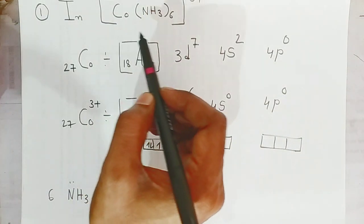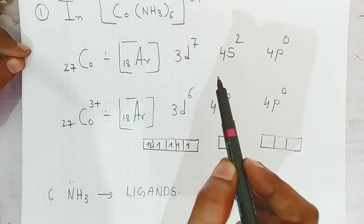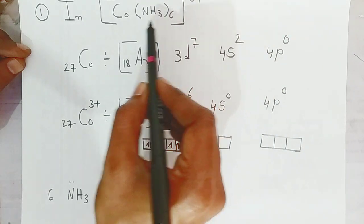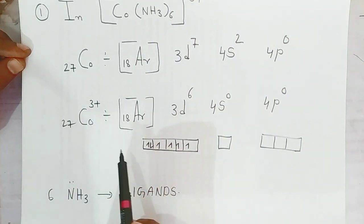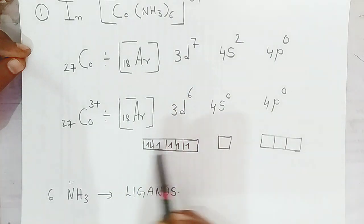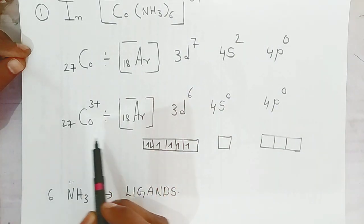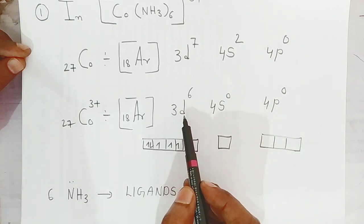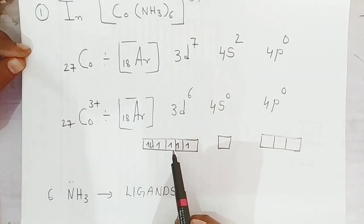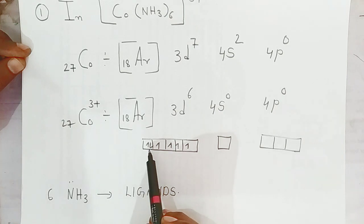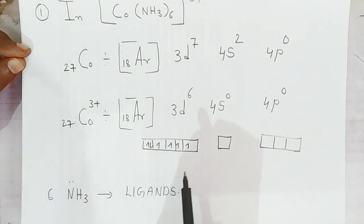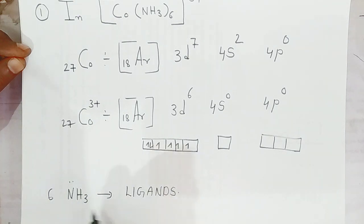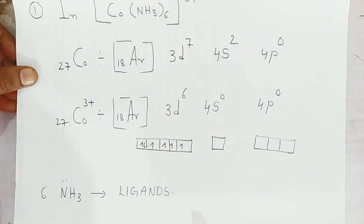The complex we are going to apply molecular orbital theory to is hexaamminecobalt(III), [Co(NH₃)₆]³⁺. The electronic configuration of Co³⁺ is 3d⁶, 4s⁰, 4p⁰ — that means in the d orbitals there are six electrons. The six orbitals of the six ammonia ligands combine with the atomic orbitals of the metal to form molecular orbitals.